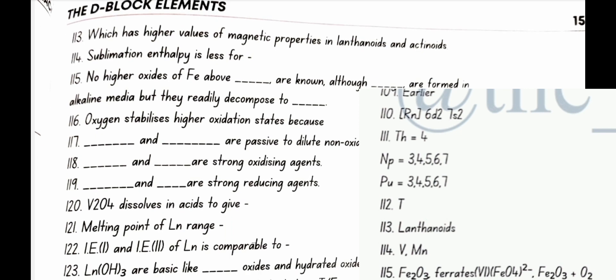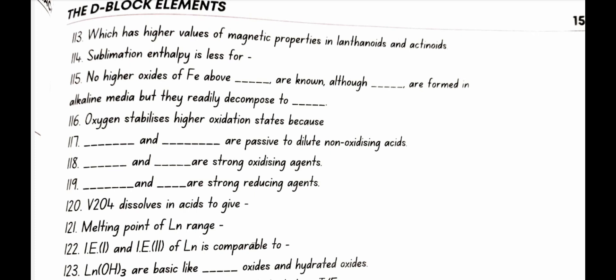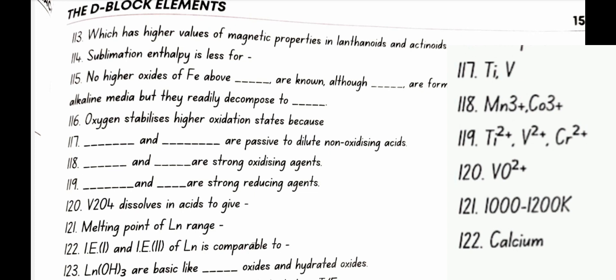Which has higher values of magnetic properties in lanthanoids and actinoids? Actinoids have higher values of magnetic properties. Sublimation enthalpy is higher for vanadium and manganese. No higher oxide of Fe above Fe2O3 are known although ferrates FeO4 2- are formed in alkaline media but they readily decompose to Fe2O3 plus O2. Oxygen stabilizes higher oxidation states because of multiple bond formation. Ti and V are passive to dilute non-oxidizing acids. Mn3 plus and Co3 plus are strong oxidizing agents. Ti2 plus V2 plus and Cr2 plus are strong reducing agents.